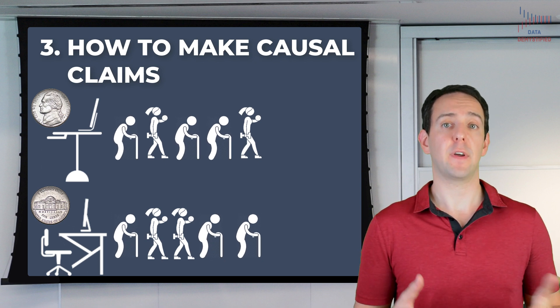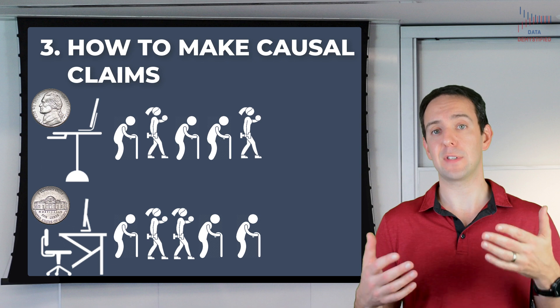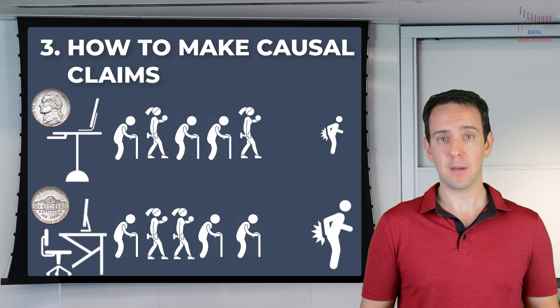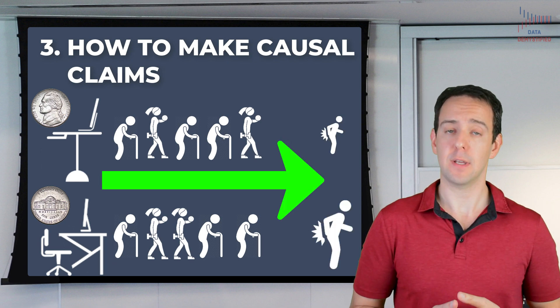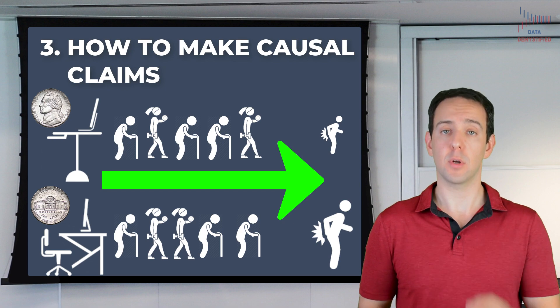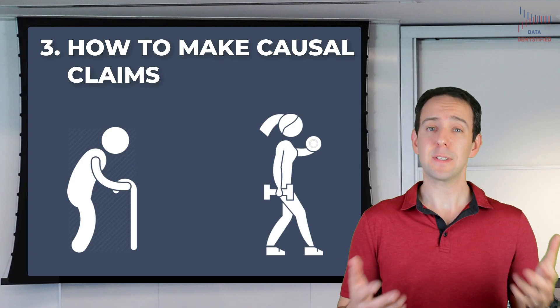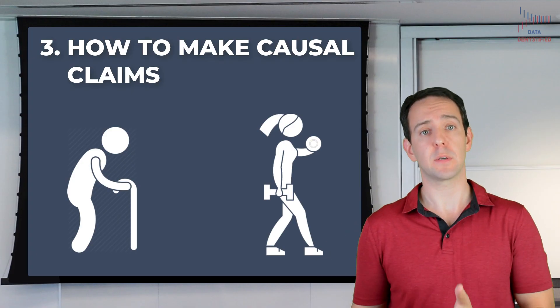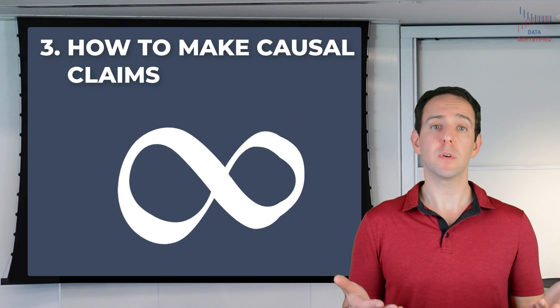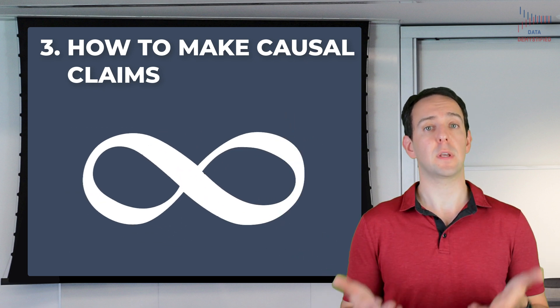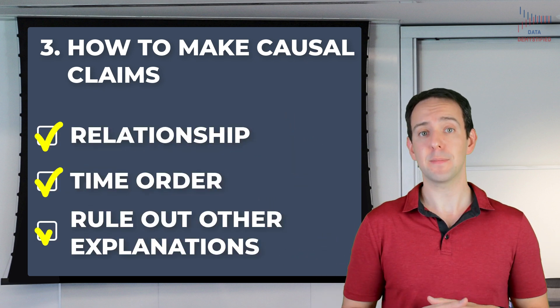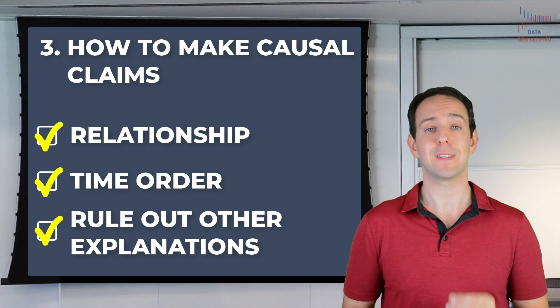I can literally flip a coin for each person — if it comes up heads, they get a standing desk, and if it comes up tails, they don't. By doing this, I'm ensuring that people who are younger or fitter are just as likely to receive a standing desk as those who are older and less fit. If I then find, after some time, that the group randomly assigned to have a standing desk has less back pain, I can make the causal claim that standing desks reduce lower back pain. It is only after this randomization that I can make this claim, because randomization is what allows me to rule out every single possible alternative explanation. In my simple example there are only two ways in which people can differ, but in the real world there are nearly infinite ways, and still, randomization allows us to rule out every one of those near-infinite differences.